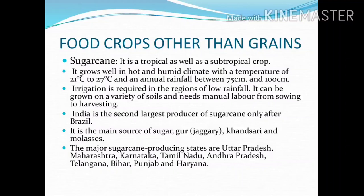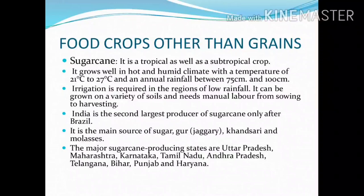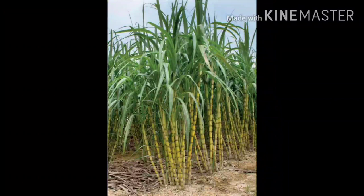Sugarcane: It is a tropical as well as subtropical crop. It grows well in hot and humid climate with a temperature of 21 to 27 degree Celsius and an annual rainfall between 75 cm and 100 cm. Irrigation is required in regions of low rainfall. It can be grown on a variety of soils and needs manual labor from sowing to harvesting. India is the second largest producer of sugarcane only after Brazil. The major sugarcane-producing states are Uttar Pradesh, Maharashtra, Karnataka, Tamil Nadu, Andhra Pradesh, Telangana, Bihar, Punjab, and Haryana.